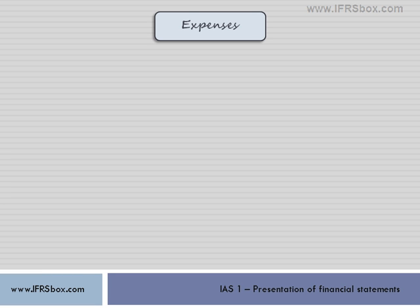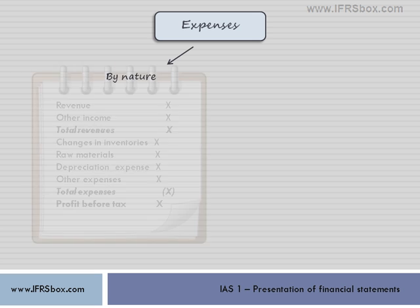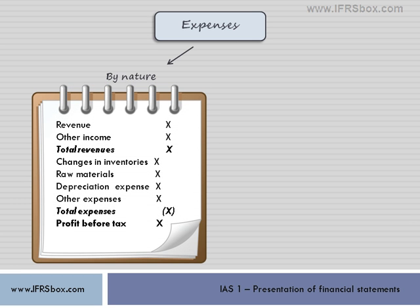Before we get to the second part of this statement, let's talk about two different forms of presentation of expenses recognized in the profit or loss statement. The first one is analysis of expenses by nature. An entity aggregates expenses within profit or loss according to their nature — for example, changes in inventories of finished goods and work-in-progress, raw materials, depreciation, transport costs, and anything relevant for the company. Expenses are not reallocated among functions within the company, and therefore this method is simpler than the second one, where expenses are presented by function.